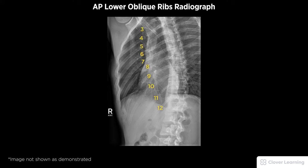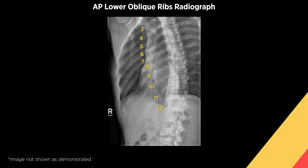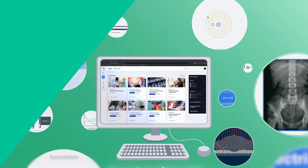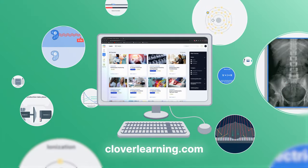A diagnostic AP lower oblique rib radiograph should be free of motion, demonstrate proper rotation, and include the eighth through the twelfth ribs in their entirety.